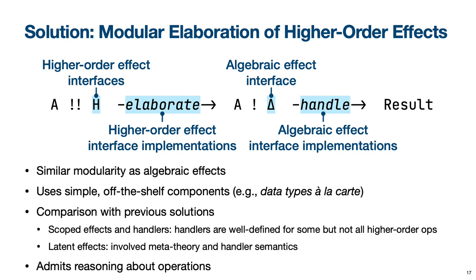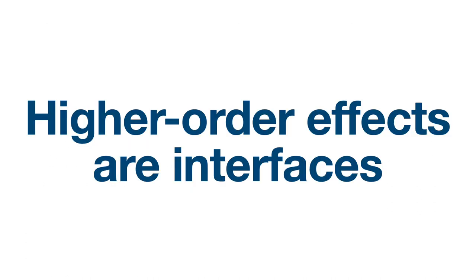The solution uses only simple, off-the-shelf ideas known from data types à la carte, but in spite of its simplicity, it lets us define all of the examples summarized earlier. In contrast, previous solutions to the higher-order effects problem either support only a subset of the higher-order effects we discussed, or they require significantly more involved machinery at the meta-theoretical level and on behalf of programmers. Finally, our solution admits verification of semantic equivalences about higher-order operations. In the rest of this talk, I'll give a flavor of how our solution works.